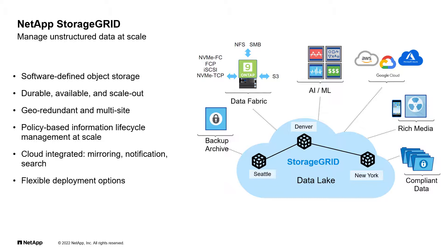On one hand, AI and ML applications are looking for large repositories to store cold data, and on the other hand, object data and the associated metadata are rich targets for data mining. StorageGRID traffic classification policies can throttle less critical workloads to prioritize Tier 1 applications. Data durability and availability is managed using powerful ILM rules that match the data protection method with your company's requirements in terms of security, hybrid cloud compatibility, cost and simplicity.